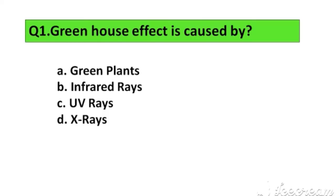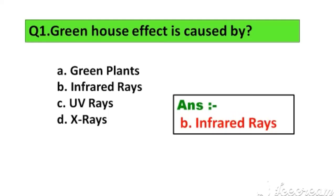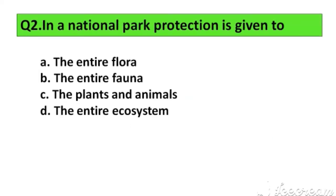Question number 1. Greenhouse effect is caused by: Option A. Green plants, B. Infrared rays, C. UV rays, D. X-rays. The right answer is Option B. Infrared rays.